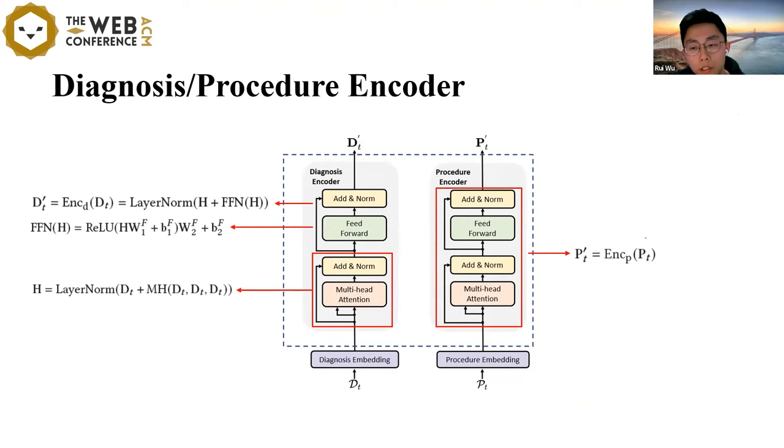The diagnosis or procedure encoder aims to represent the patient's health conditions based on the diagnosis or procedure code. The encoder we use here is a transformer-based network, which can capture the interaction information between the codes.